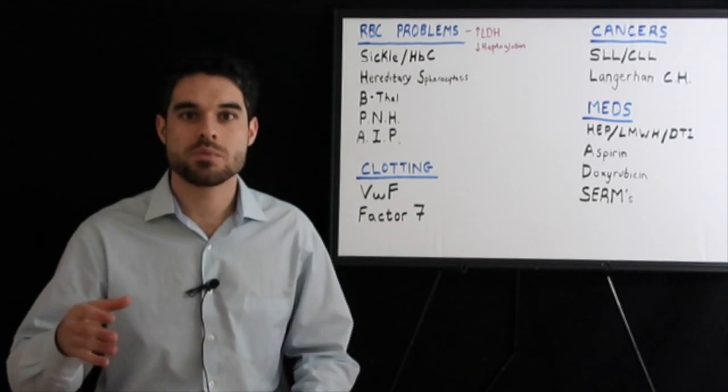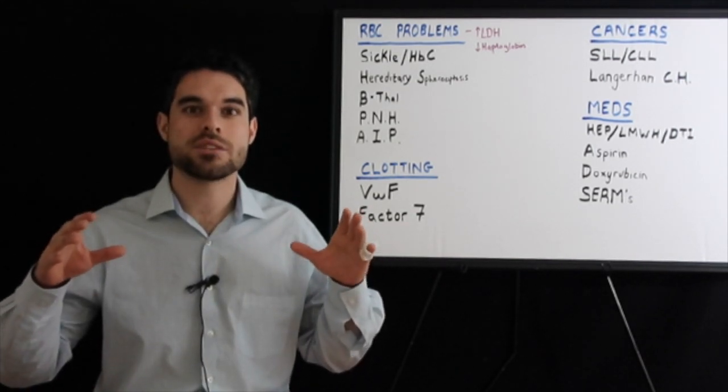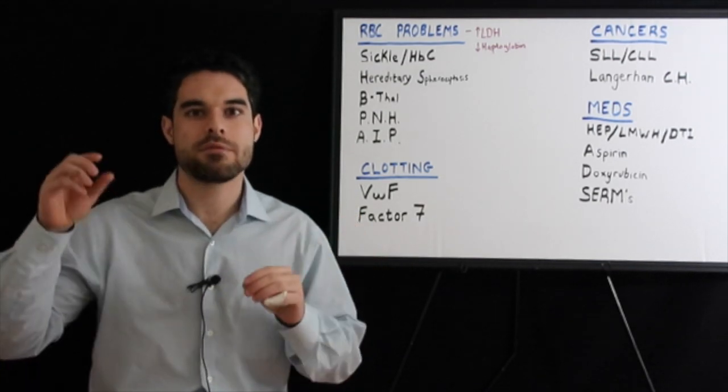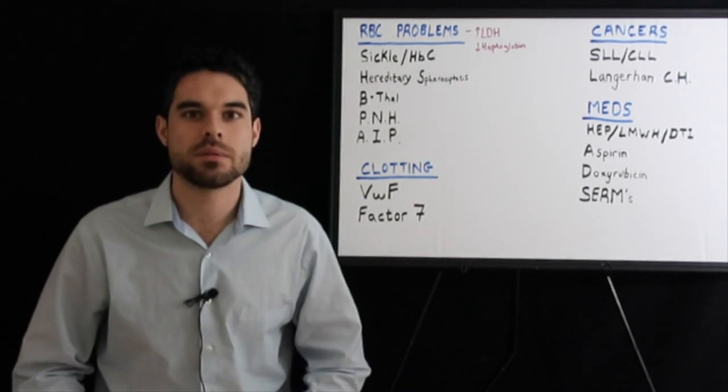Hereditary spherocytosis is when the red blood cells are too large. You have increased MCHC and early central pallor. Because the cells are too large, they can't fit through the small spaces in the spleen, so they get attacked.